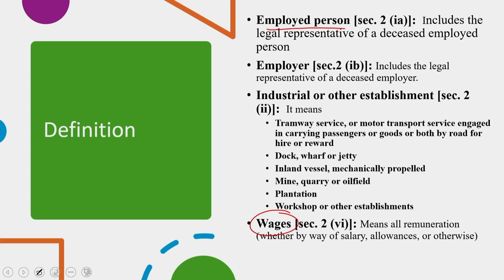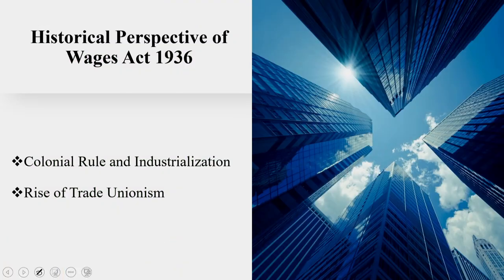However, wages do not include any bonus under a scheme of profit sharing that does not form part of remuneration payable under terms of employment, or is not payable under any award, settlement, or court order. It will not include the value of house accommodation or supply of essentials like light, water, medical attendance or other amenities. It will not include any contribution paid by the employer to any pension or provident fund, any travelling allowance or travelling concession, any sum paid to defray special expenses entailed by the nature of employment, or any gratuity payable on termination of employment except as specified in the act.